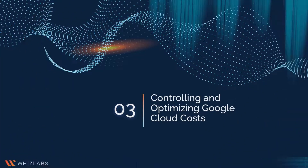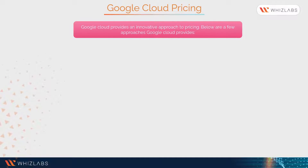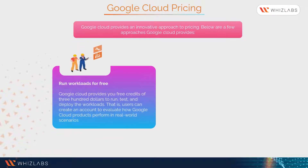Let's now learn about controlling and optimizing Google Cloud costs. Google Cloud provides an innovative approach to pricing. You can run workloads for free, as Google Cloud provides free credits of $300 to run, test, and deploy workloads. This means users can create an account to evaluate how Google Cloud products perform in real-world scenarios.